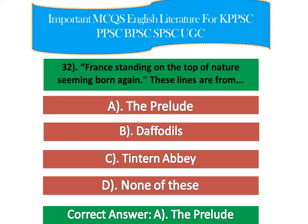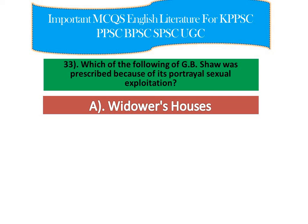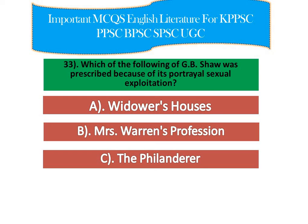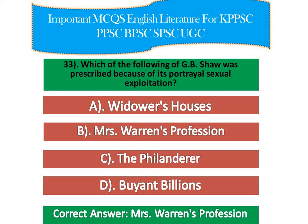Question number 8: Which of the following by George Bernard Shaw was proscribed because of its portrayal of sexual exploitation? Option A: 'Widowers' Houses', option B: 'Mrs Warren's Profession', option C: 'The Philanderer', option D: 'Heartbreak House'. The right answer is option B — 'Mrs Warren's Profession'. It is a play written by George Bernard Shaw, published in 1893 and performed in 1902.